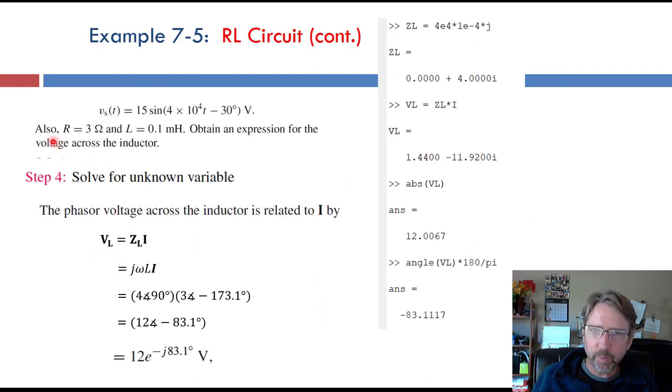If we read through the problem, we're not quite done, because we need to find an expression for the voltage across the inductor. And what we have right now is the current through the inductor. So we can use Ohm's law again, where V, the voltage across the inductor, is I times Z. And it's Z of the inductor this time. So j omega L times the current that we just found.